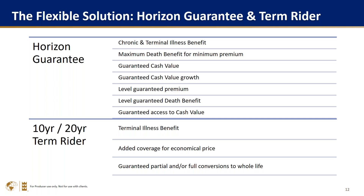You certify through your own doctor as being unable to perform two of those activities, and then you can accelerate the death benefit and use the money for whatever you want. That acceleration is income tax free to the client — they don't have to show us any receipts. The critical illness benefit we just added has triggers for certain types of cancer, heart attacks, stroke, kidney failure, and major organ transplant. With those major triggers, you can accelerate up to $25,000 per election per year, and again, that's income tax free.